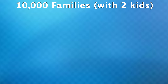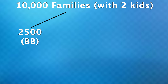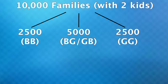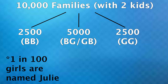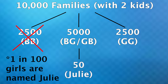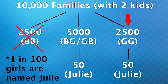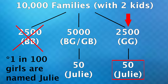Imagine 10,000 families all with two kids, where we tell only families with a girl named Julie to step forward — that's our given. The split is 2,500 families with two boys, 2,500 with two girls, and 5,000 with a boy and a girl. Let's say the name Julie is given to 1 in 100 girls. None of the two-boy families step forward. Of the 5,000 boy-girl families, on average 50 will have a daughter named Julie. There are also 2,500 two-daughter families with 5,000 daughters total, so on average 50 of those families will also have a girl named Julie — assuming no family named both daughters Julie. So there are 100 total families with a daughter named Julie, and 50% of those have two daughters.